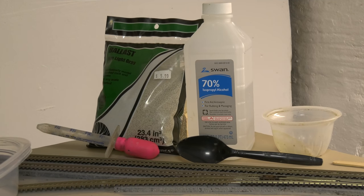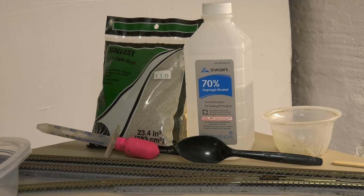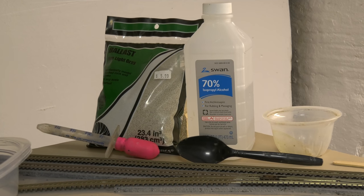And now it's time to ballast. Nothing out of the ordinary. I'm just using Woodland Scenic's ballast. Rubbing alcohol. You can get like the 70% or 85%. Some water. A spoon. A syringe. Some little bowls. And then we're going to use some Elmer's glue.